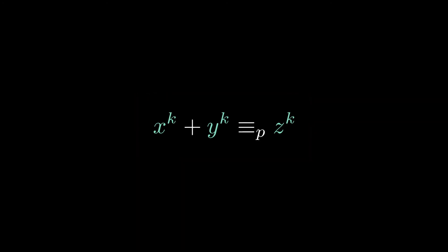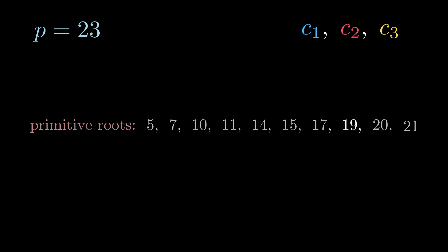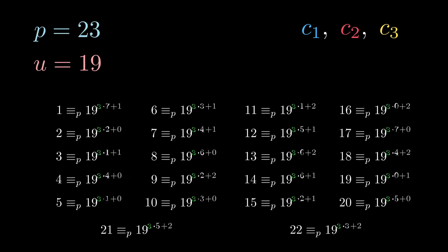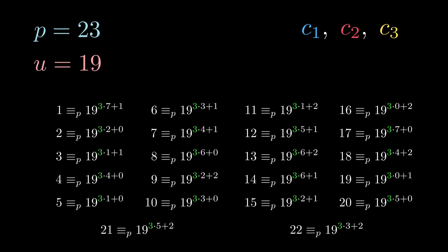I'll do an example with k being 3. For three colors, the relevant Ramsey threshold is 17, so we need to select a prime larger, say 23. 23 has many primitive roots, I'll choose the largest one like 19 for fun. We then express all numbers from 1 to 22 as powers of 19 modulo 23. Next, perform Euclidean division by 3, on all of those powers.